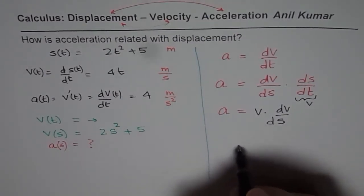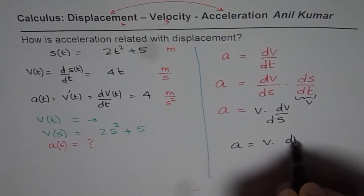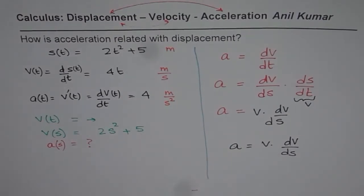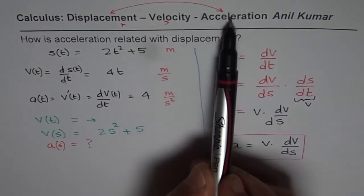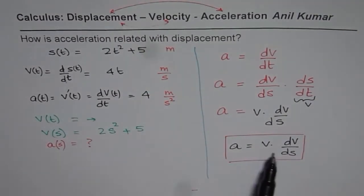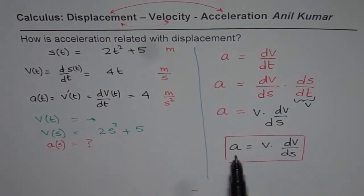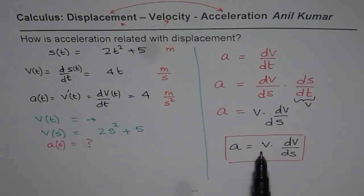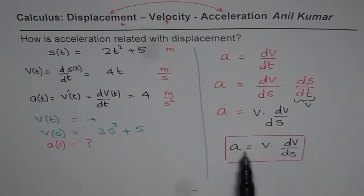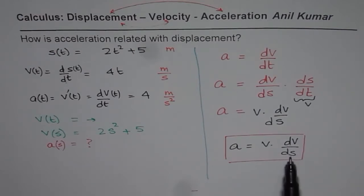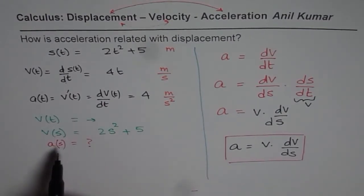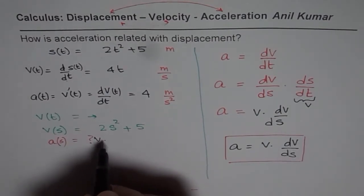Now, ds/dt is velocity. Since we know that ds/dt is velocity, we can write this as velocity times dv/ds. Therefore, we can write acceleration as v times dv/ds. This is the formula I want to discuss in this video. I hope you understand and appreciate how acceleration is related with velocity and displacement. With this formula, we can now solve for acceleration.